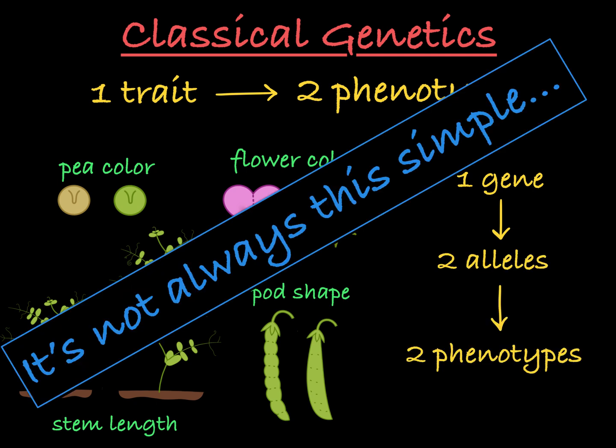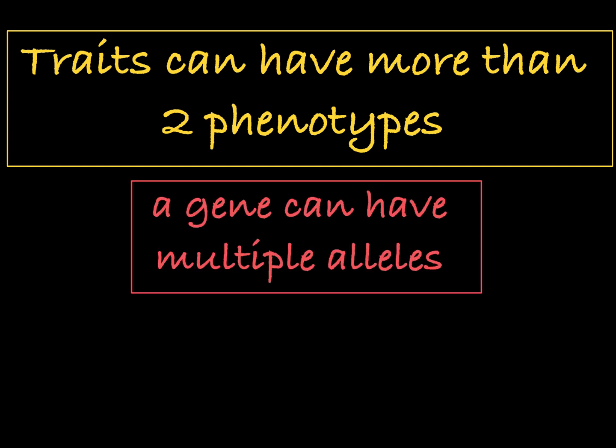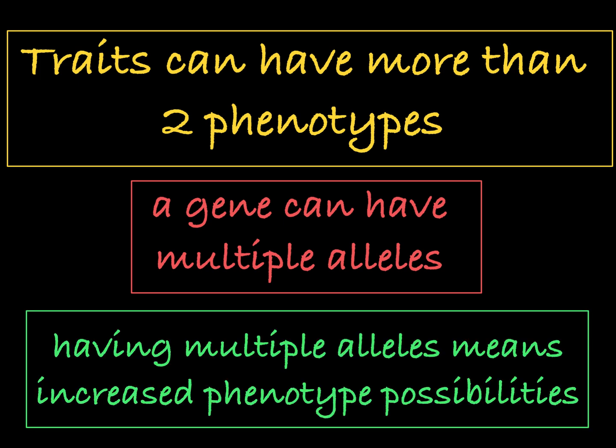But things aren't always that simple. For many traits, more than two alternative phenotypes exist. One reason for this is that for some genes, multiple different alleles or versions exist. This variety in alleles creates a wider range in phenotypes associated with one particular gene.